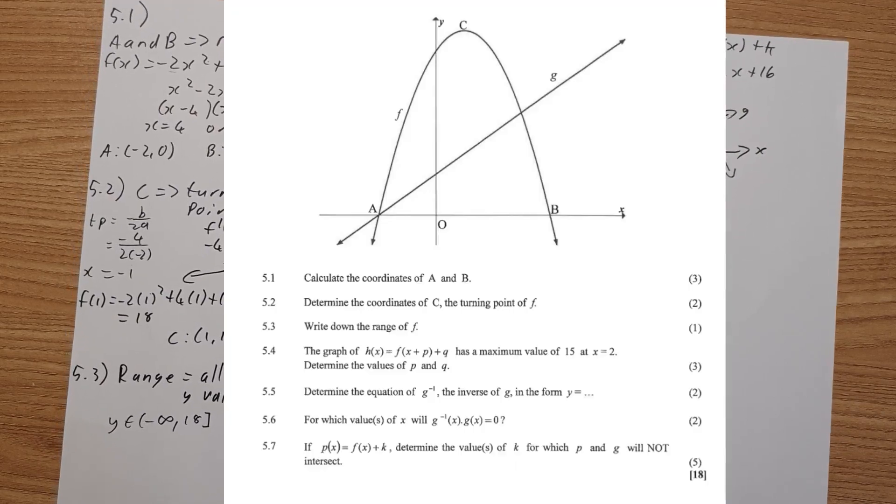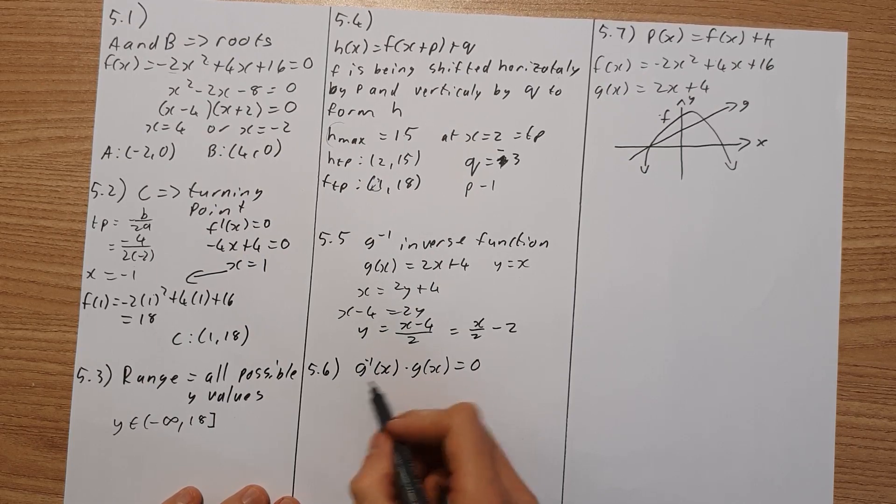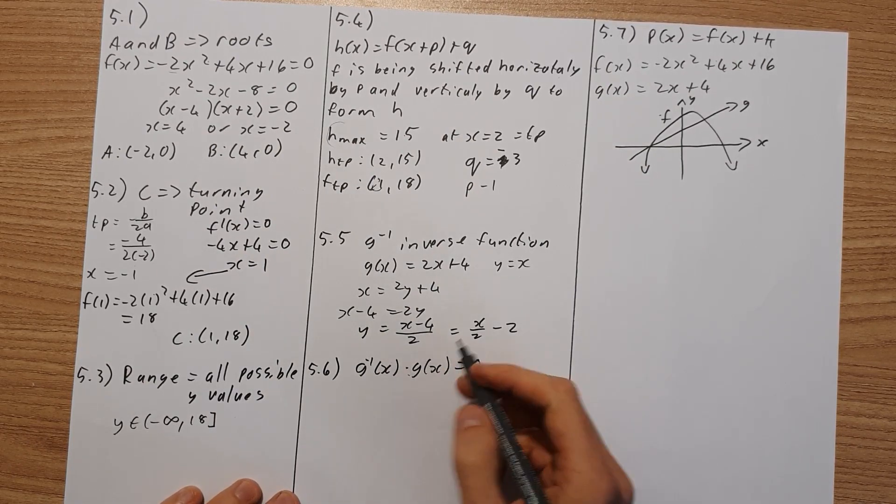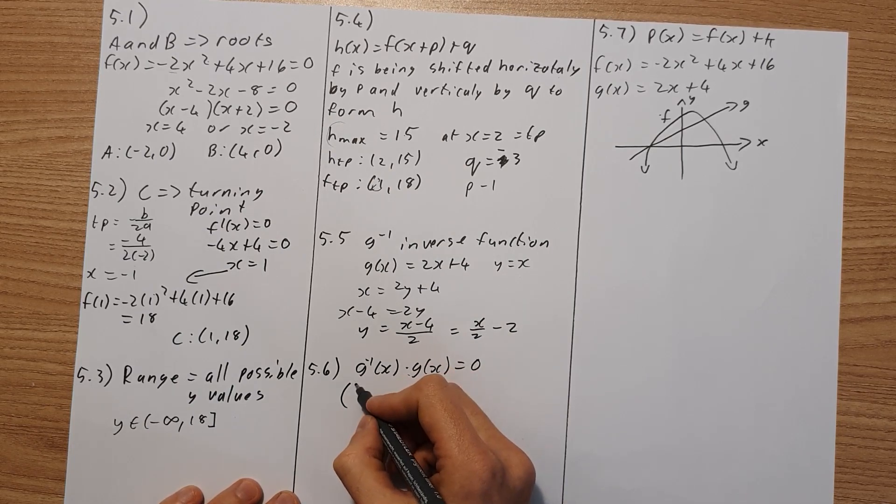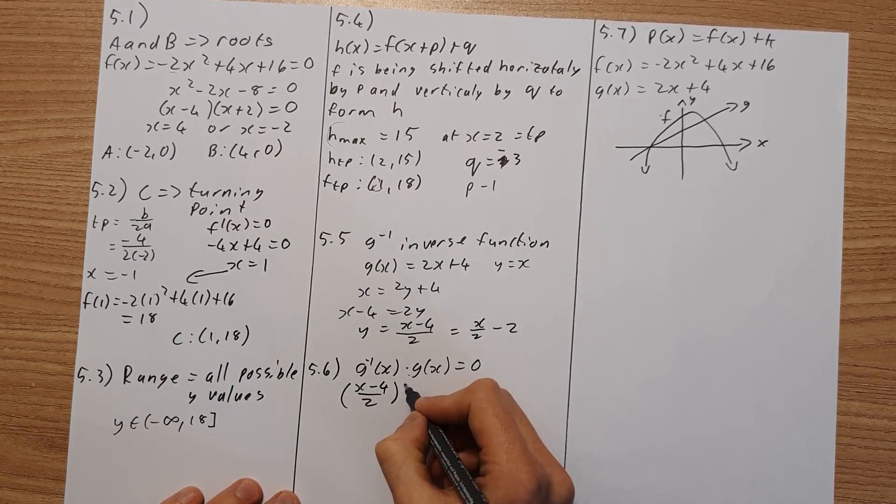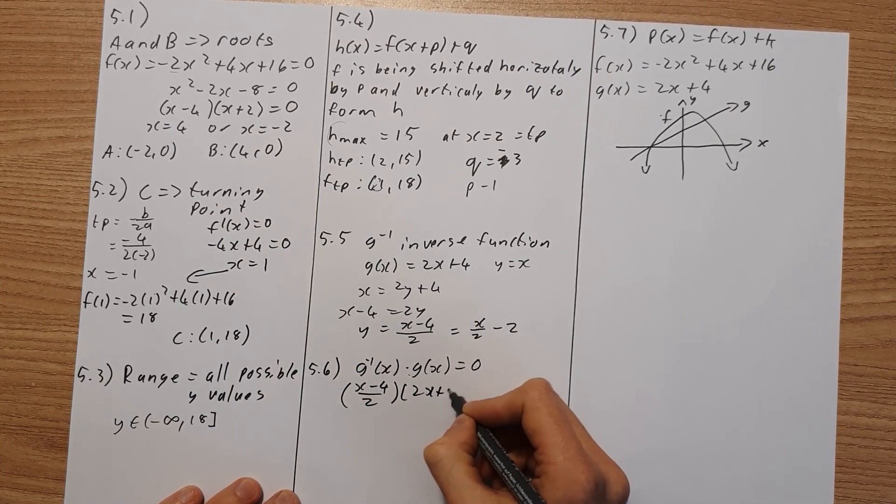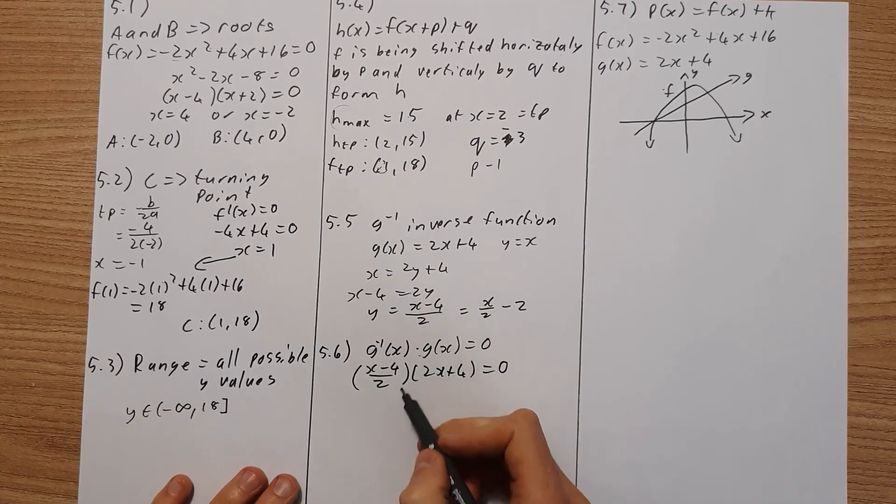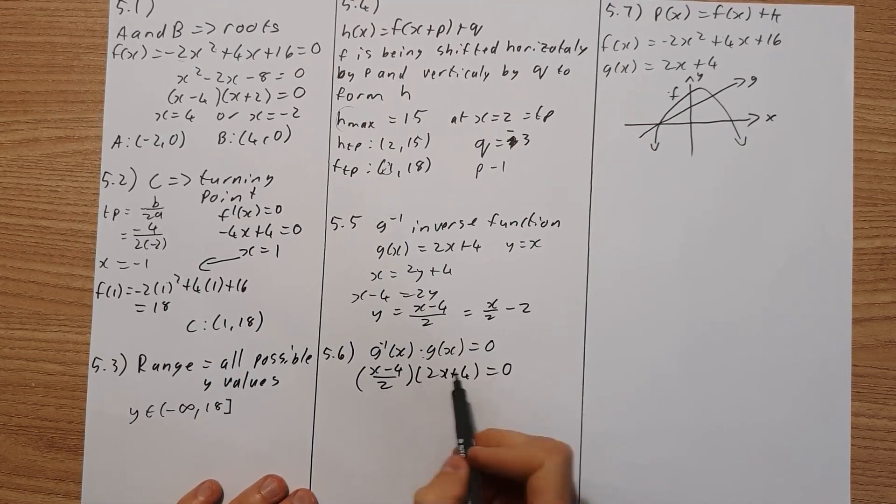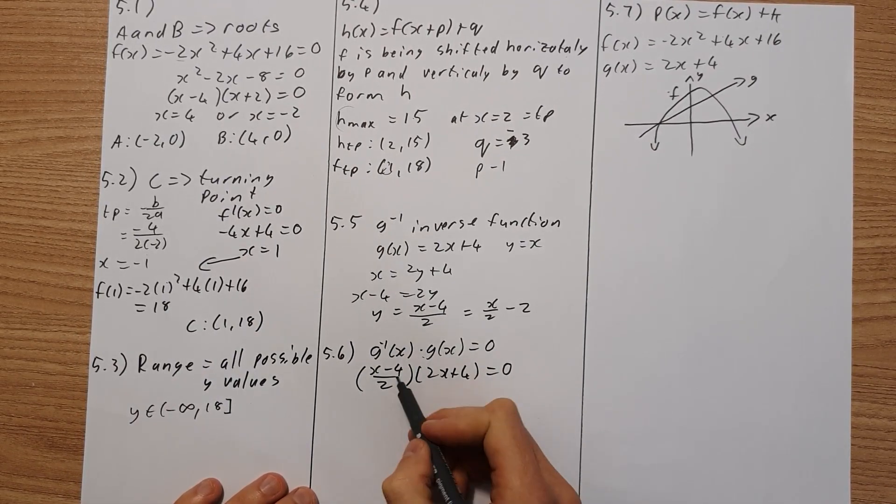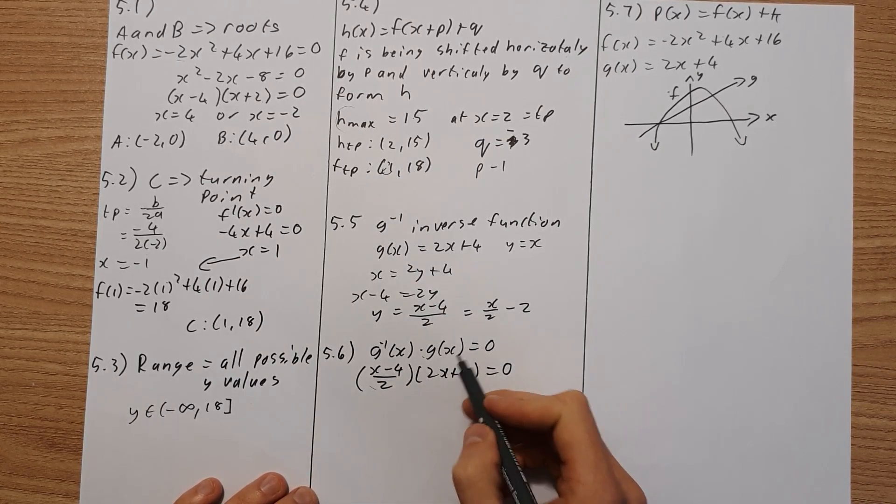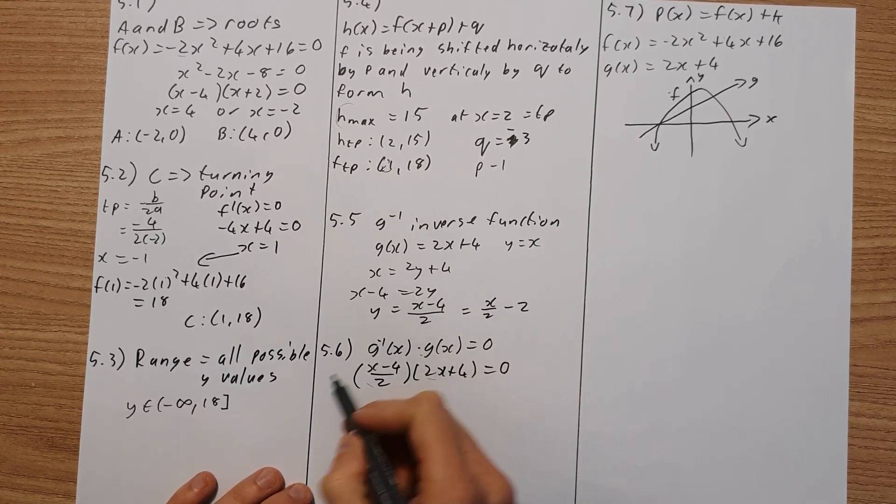Now 5.6 is asking for which values of x will g, the inverse of g times by g equal to 0. So we know what the functions look like, so let's substitute them in. So we have x minus 4 over 2 multiplied by 2x plus 4, and we want to know when is that equal to 0. Now you would think now you must factorize this or FOIL out, but you don't need to because you can see that if this bracket equals 0, then this whole thing is true. Or if this bracket equals 0, then the whole thing is true.